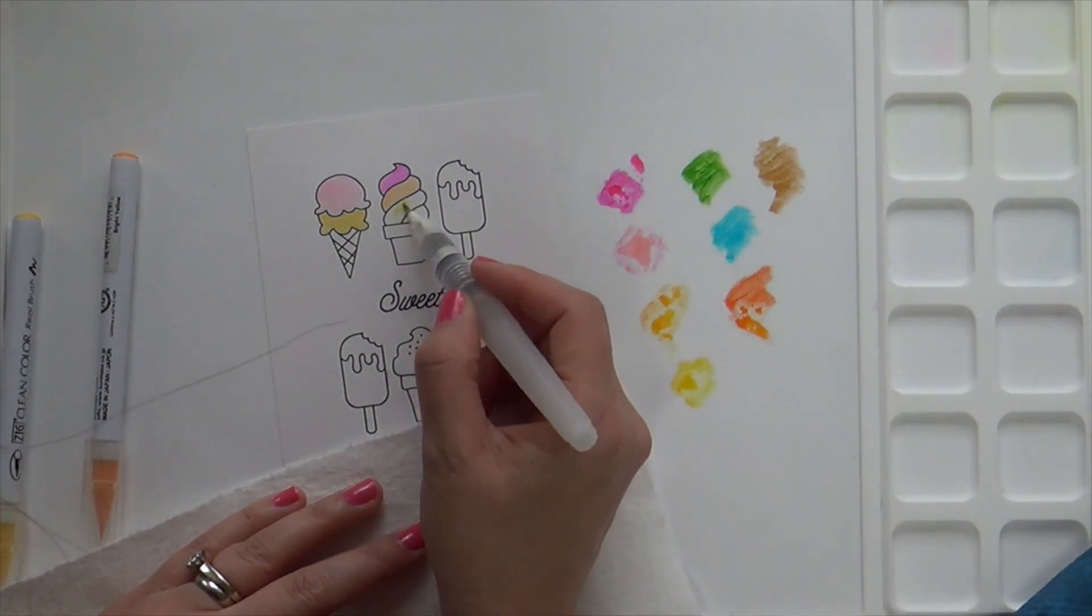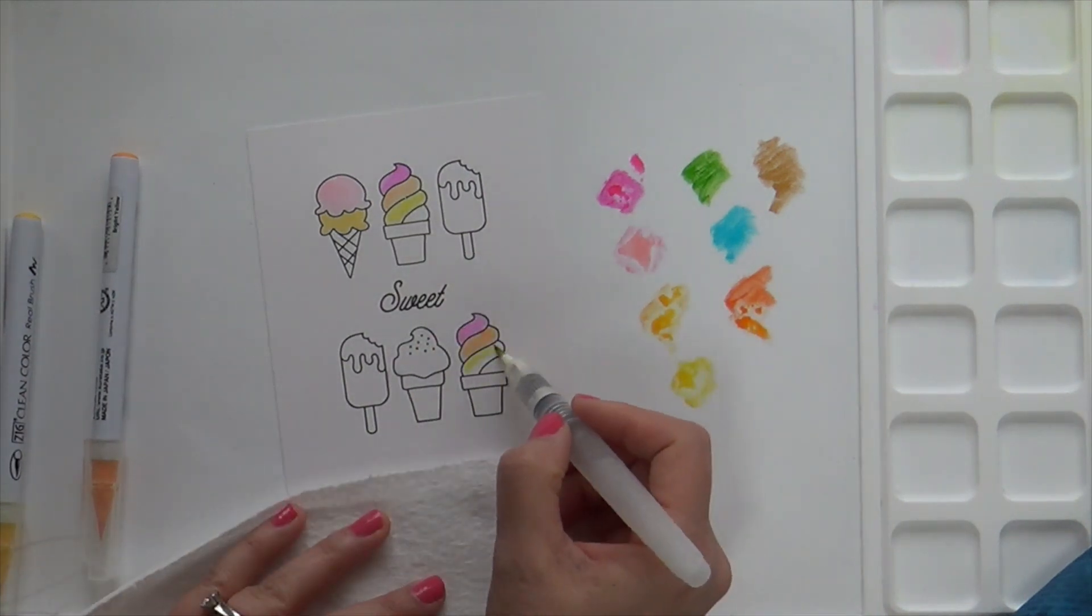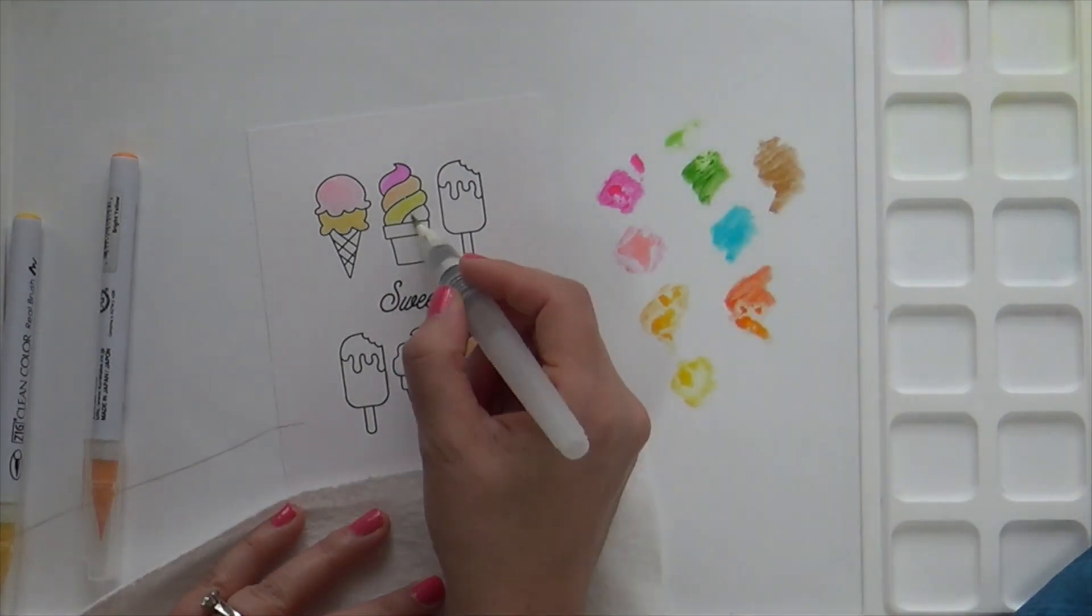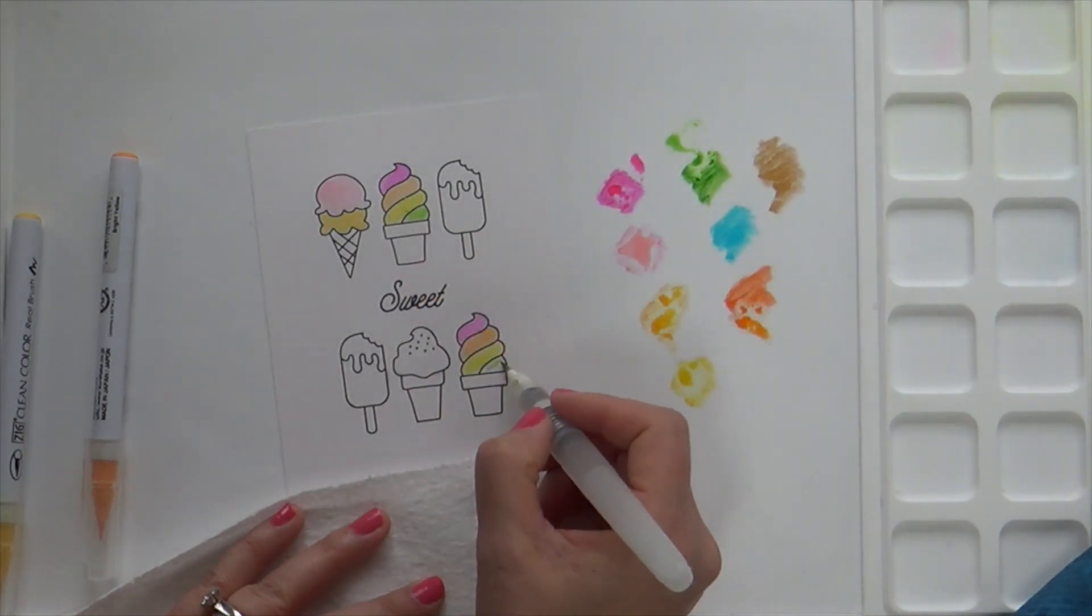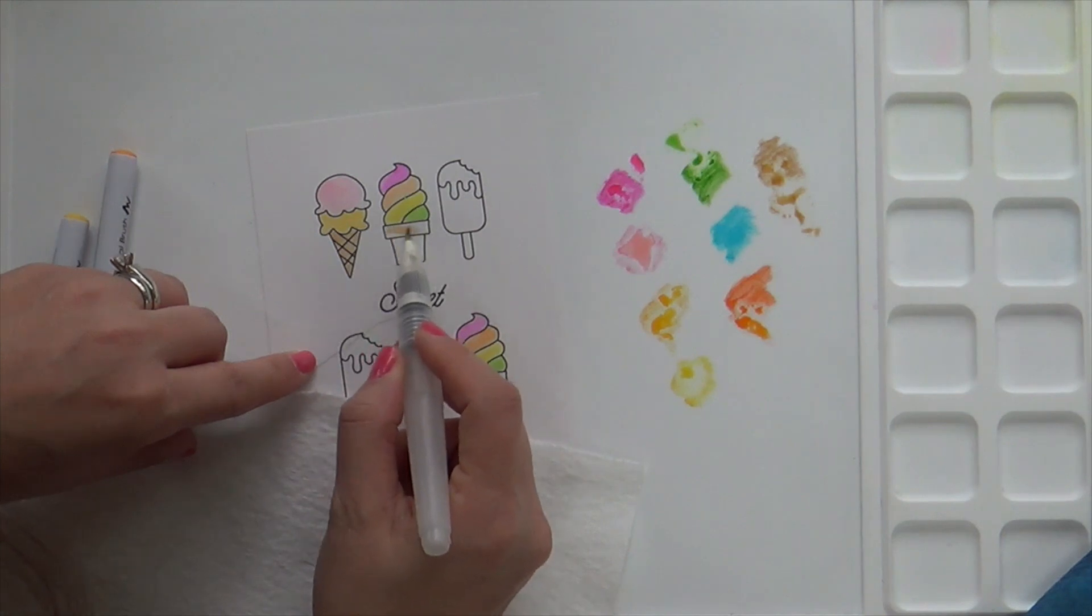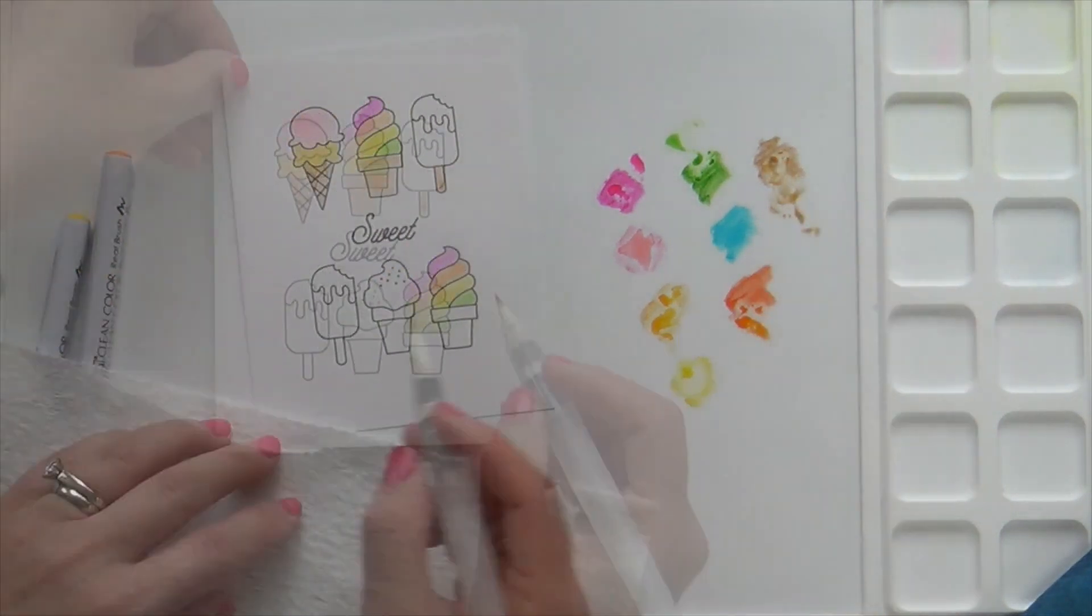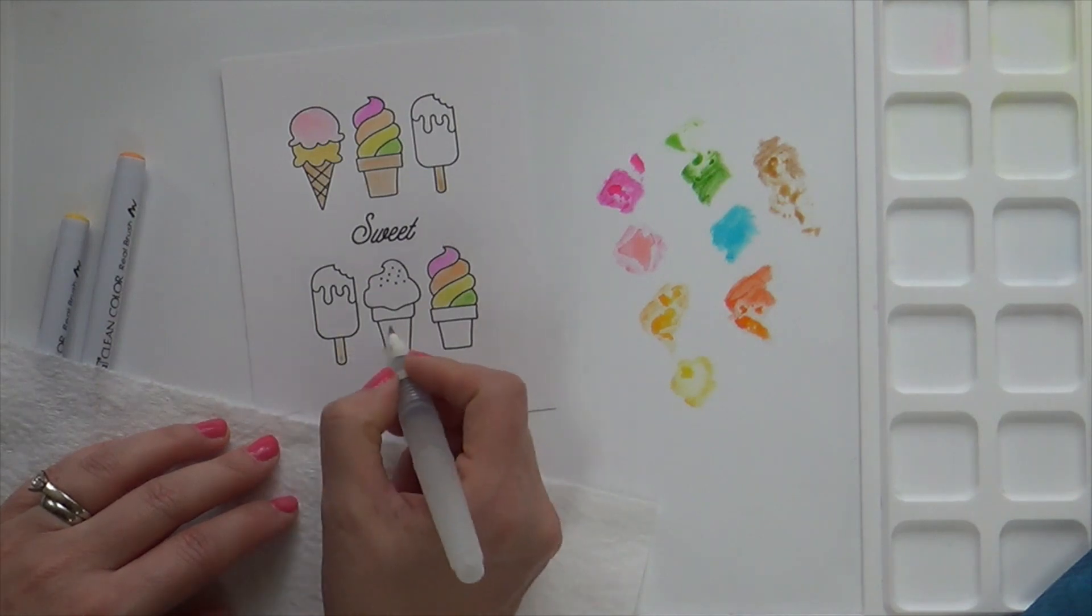That would be great if you wanted to smoosh the little mini distress inks. They size perfectly to smoosh those in the wells, and you could add some water and paint with your distress inks. If you're using like a lot of water and mixing it, it'd be great to do it in the wells. I'm not really getting very wet, and that is why the Bristol paper works perfectly for this. Bristol paper is not really intended for wet medium, but since I'm not getting drenched, it works fine.